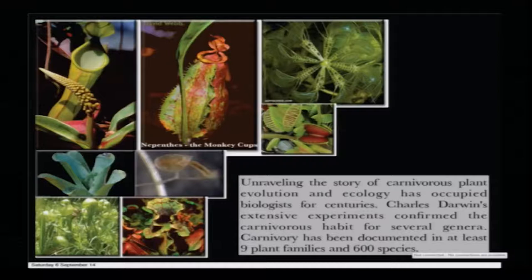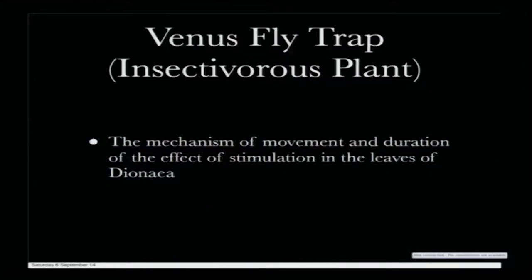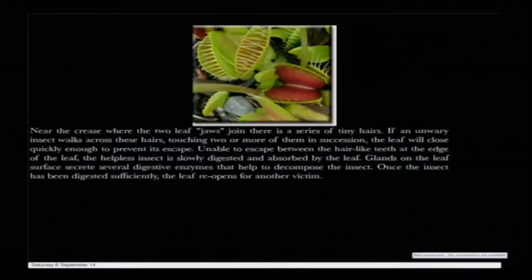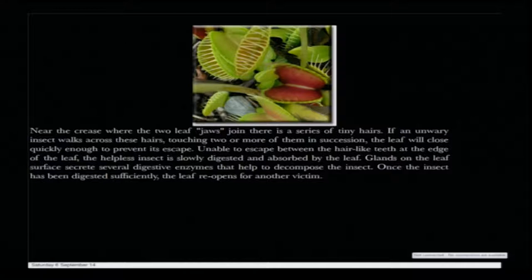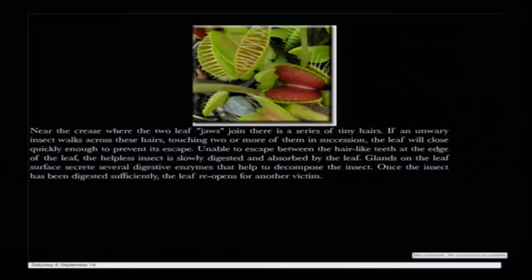Most of the time insects come and get attracted by those mucilages and that is where they get trapped. Now, the trap we are going to talk about is the Venus flytrap — the mechanism of movements and duration of effects of stimulation in the leaves. It has two states: either the trap remains open, with the red inner surface visible, or it closes. Near the crease where the two leaf jaws join there is a series of tiny hairs. If an unwary insect walks across these hairs touching two or more of them in succession — this is very important — the leaf will close quickly enough to prevent its escape.